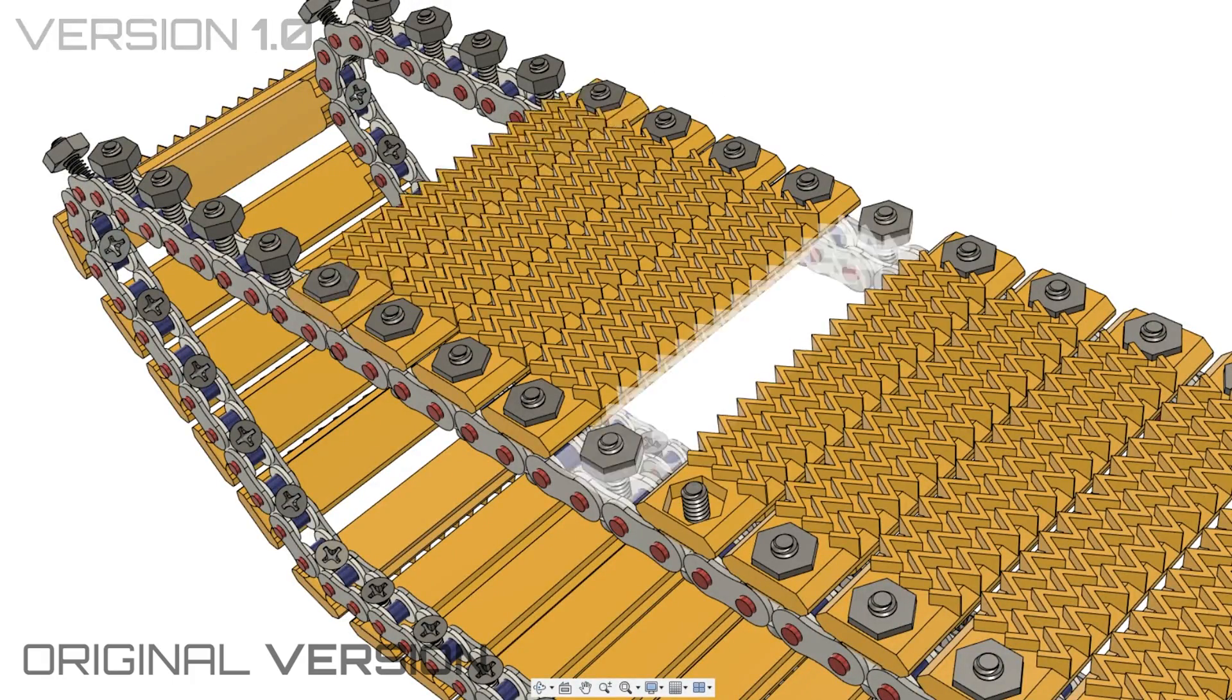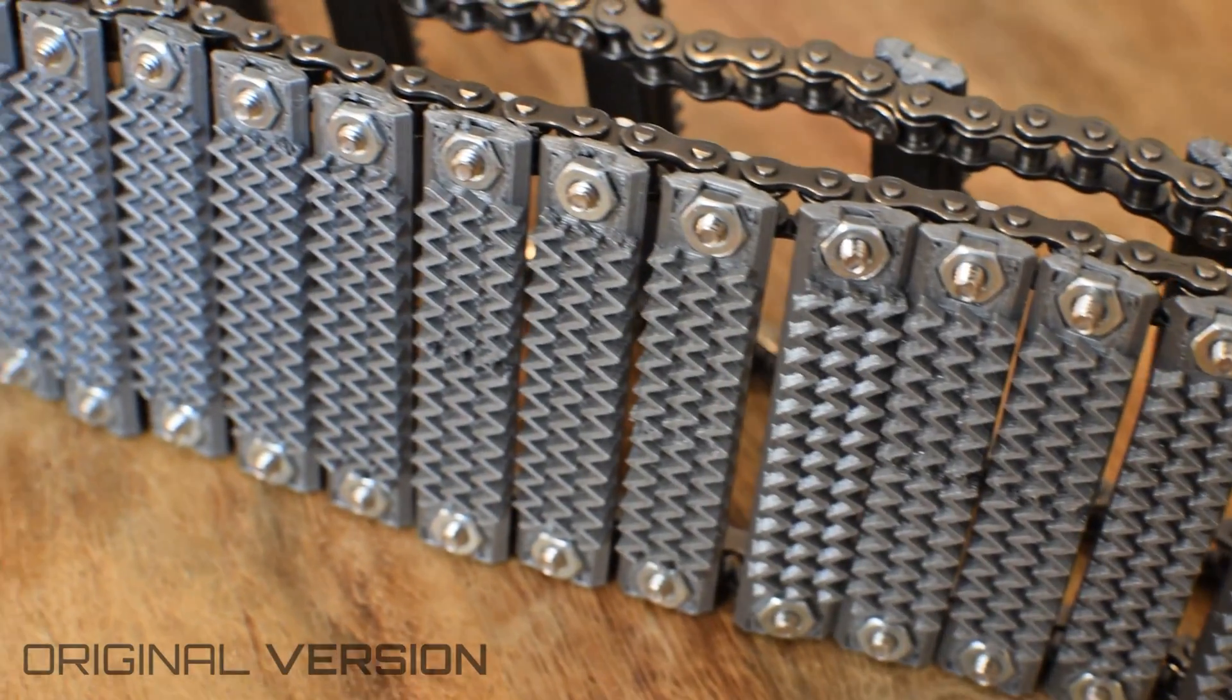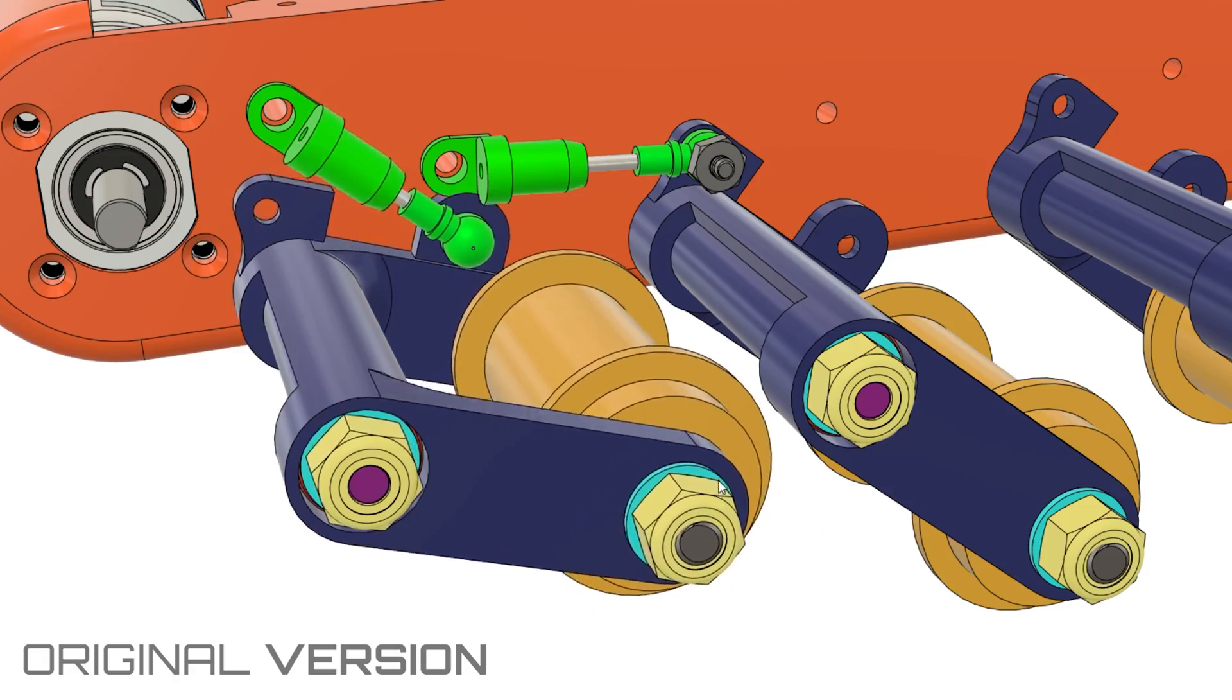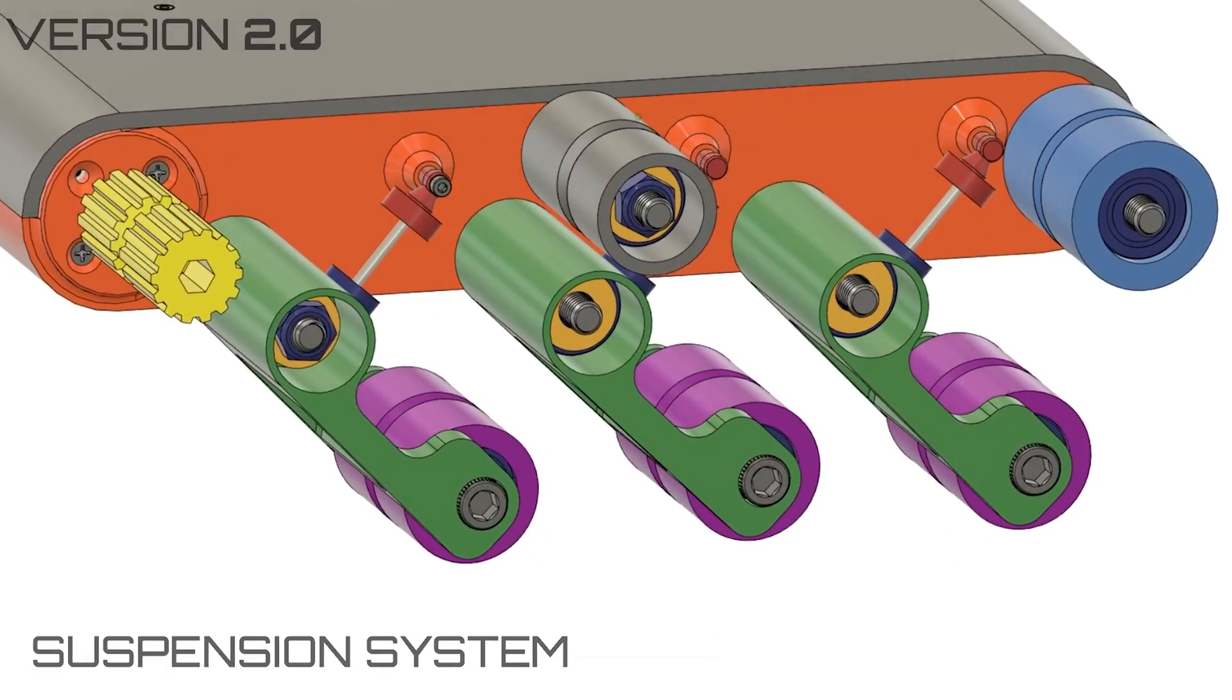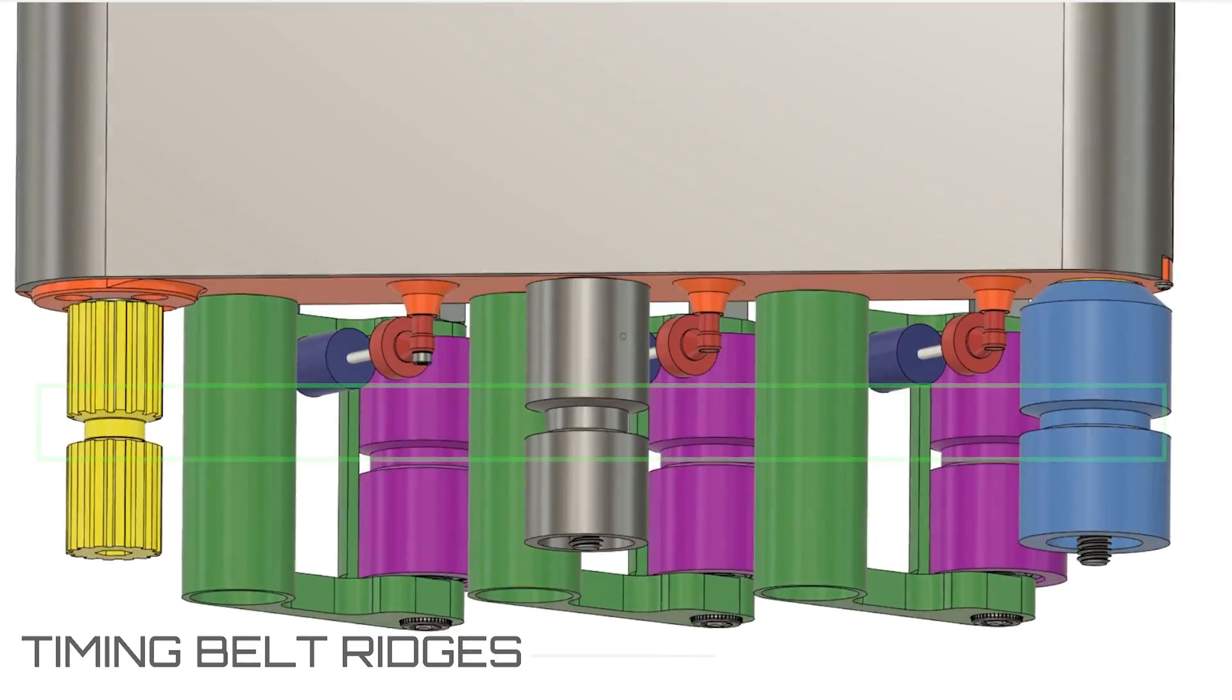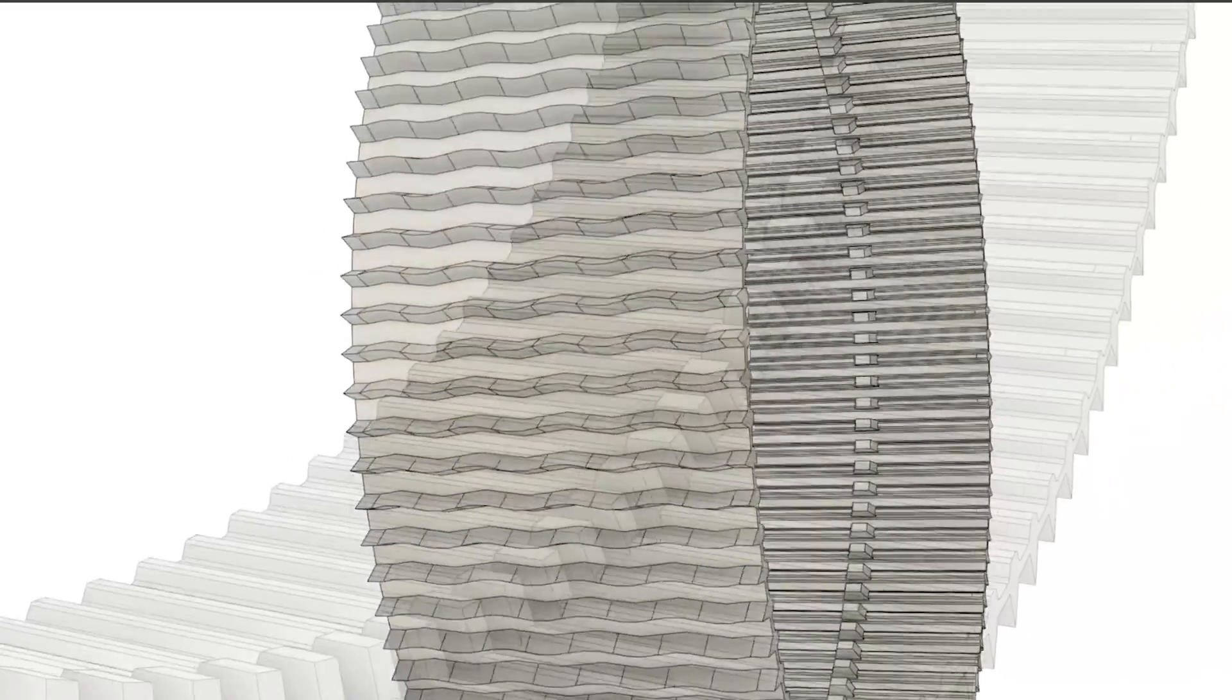The original version used roller chains connected with 3D printed links. These took forever to assemble by hand, and the suspension was overly complex. These are improved in the new version. One less rocker arm and ridges for a flexible belt tread remove complexity and weight.